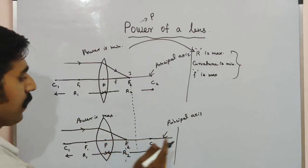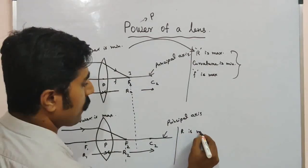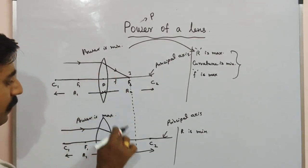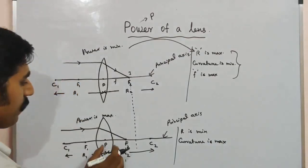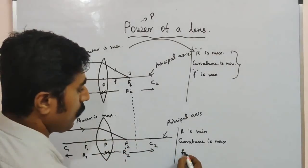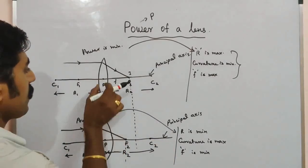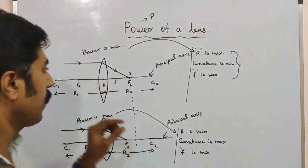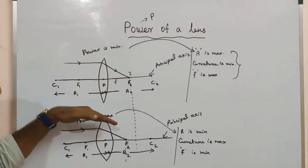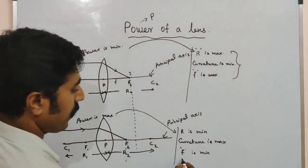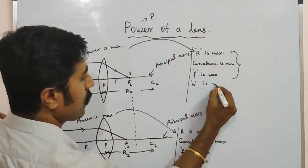When the focal length is less, the radius of curvature is minimum. When radius of curvature is minimum, the bending is more, so curvature is maximum. Then focal length f is minimum, and therefore power is maximum.